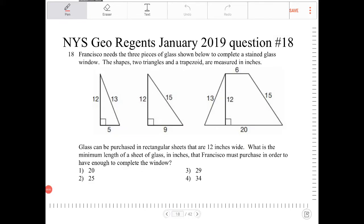Francesco needs three pieces of glass shown below to complete a stained glass window. The shapes, two triangles and a trapezoid, are measured in inches. Glass can be purchased in rectangular sheets that are 12 inches wide. What is the minimum length of a sheet of glass in inches that Francesco must purchase in order to have enough to complete the window?